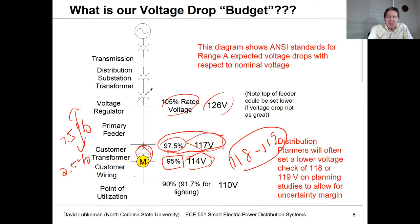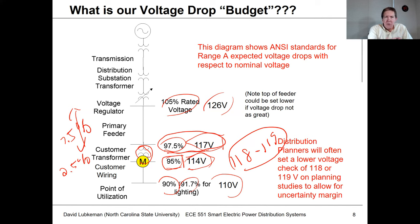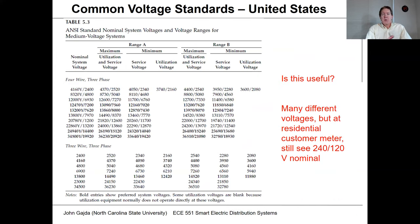Customer wiring is not the utility's responsibility. The customer must ensure that if they take service at 95%, the voltage doesn't drop below 90%, which corresponds to 110 volts. For lighting, it's supposed to be a bit higher than that, since incandescent lighting was sensitive to voltage magnitude.